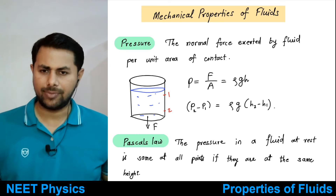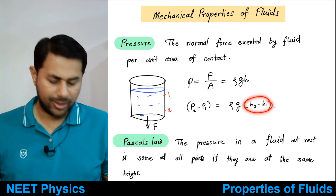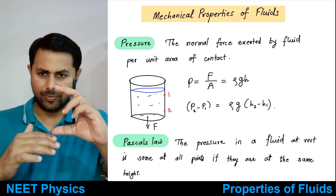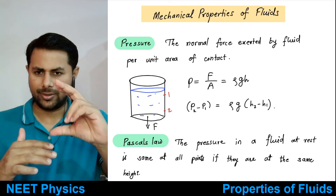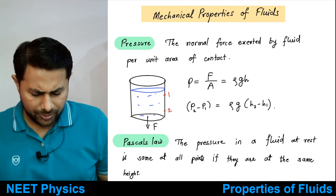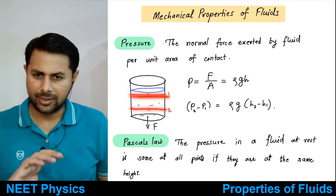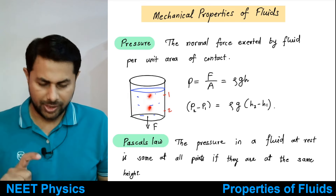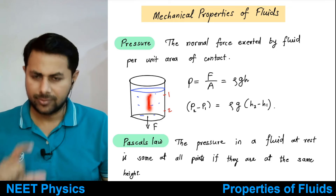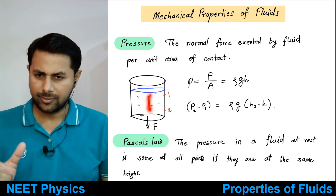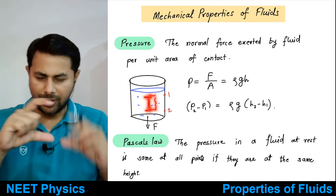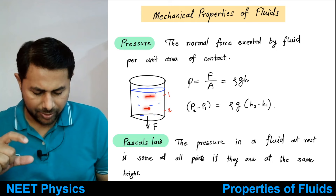P2 minus P1 is rho g (h2 minus h1). We need to remember that this is not the height of the point — this is the height of the liquid column above that point. If you just take any two points inside the liquid, the pressure difference between them is rho g multiplied by the difference in heights, or equivalently the length of the liquid column between those two points.